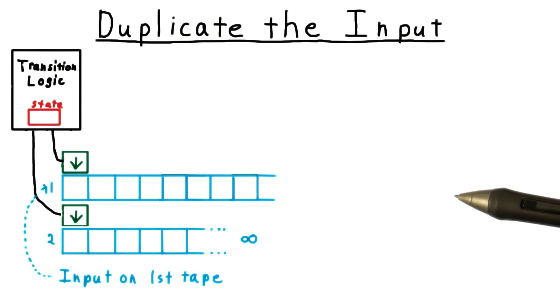Let's see a multi-tape Turing machine in action. Input always comes in on the first tape, and all the heads start at the left end of the tape.